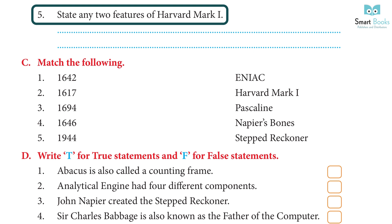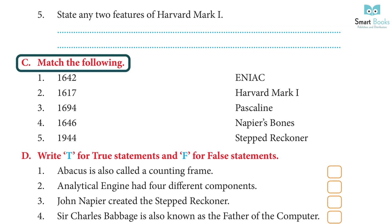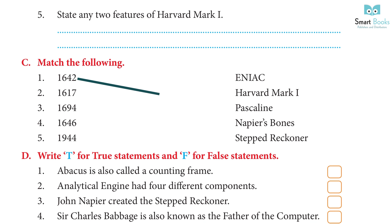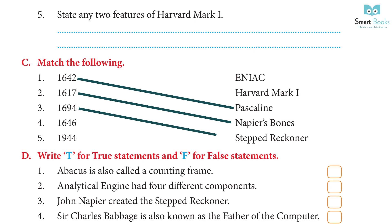5. State any two features of Harvard Mark I. Answer: 1. It is also referred to as the Automatic Sequence Controlled Calculator. 2. It is a General Purpose Electromechanical Computer. Match the following: 1. 1642 — Pascaline. 2. 1617 — Napier's Bone. 3. 1694 — Step Reckoner. 4. 1946 — ENIAC. 5. 1944 — Harvard Mark I.